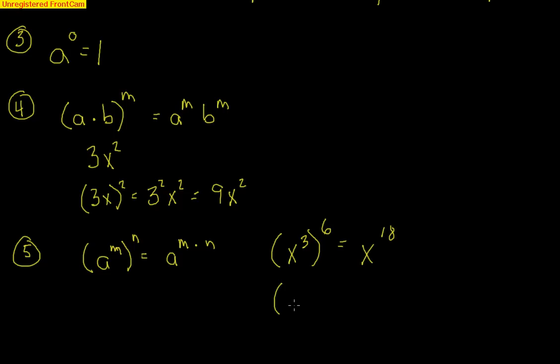We could also do it with negative exponents. We've got y to the negative 2 raised to the 3rd. Again, we have multiplying. We get y to the negative 6th. But wait a minute. We don't like leaving negative exponents. So that's 1 over y to the 6th. Should make complete sense.